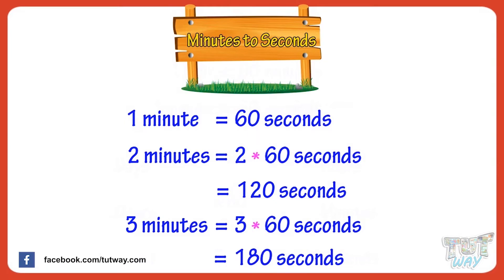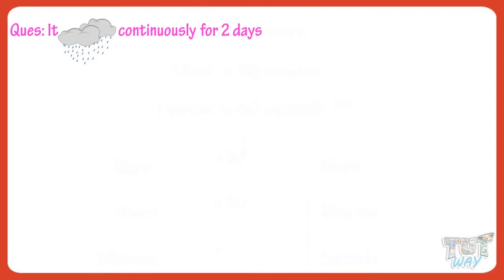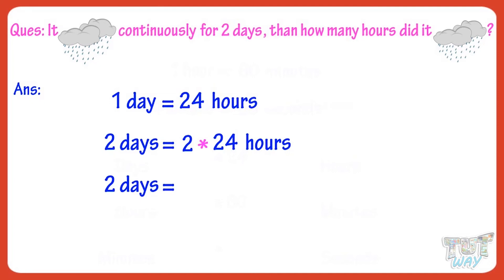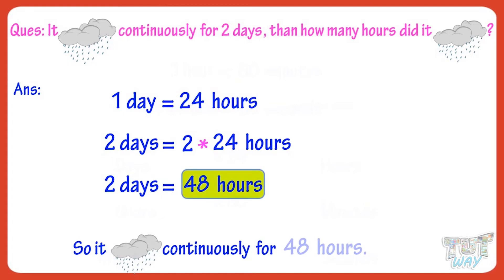Now let's solve a few questions based on what we learned. It rained continuously for two days. Then how many hours did it rain? One day equals 24 hours. Two days equals 2 multiplied by 24, equals 48 hours. So it rained continuously for 48 hours.